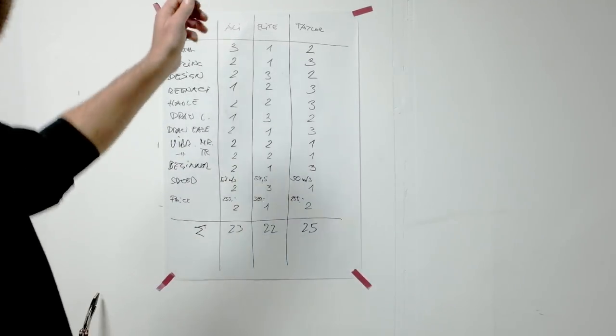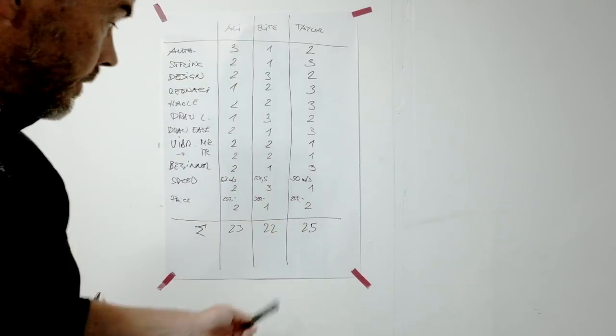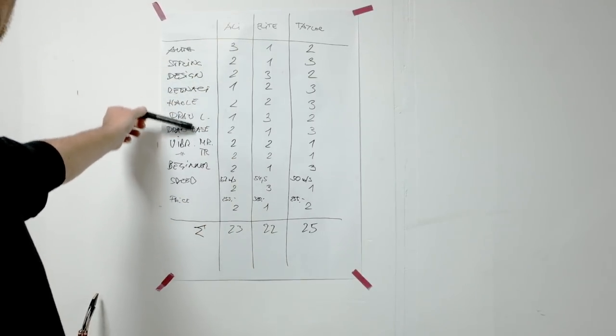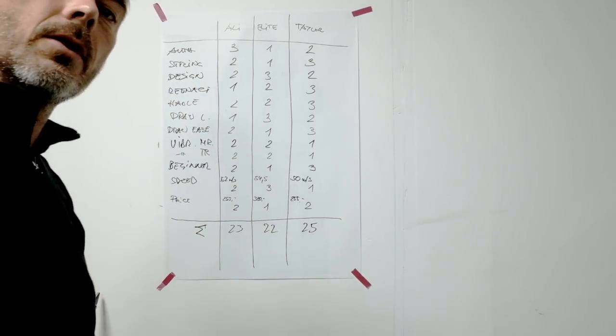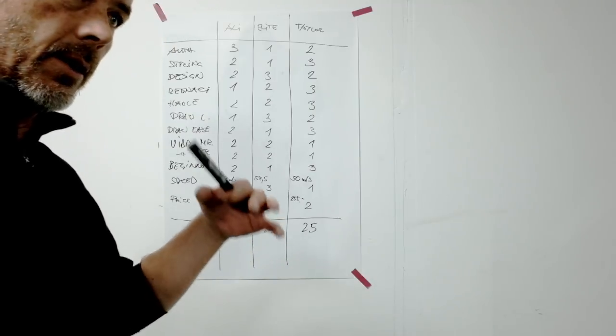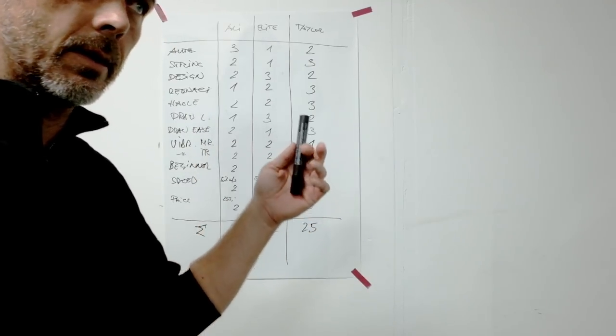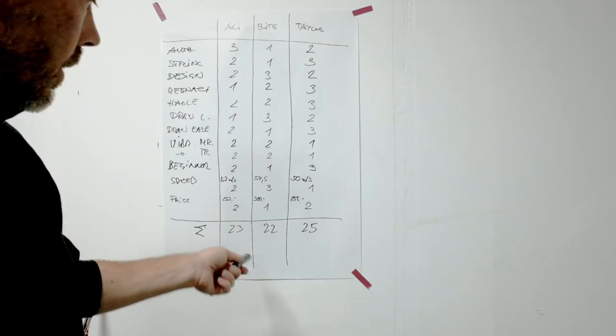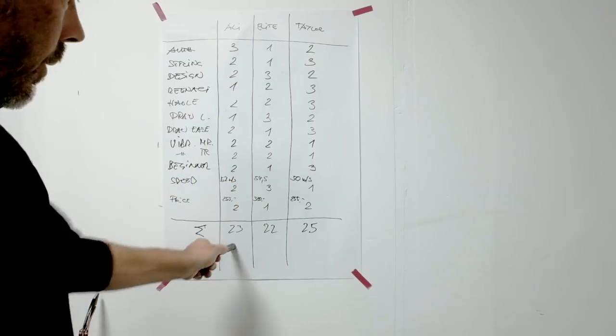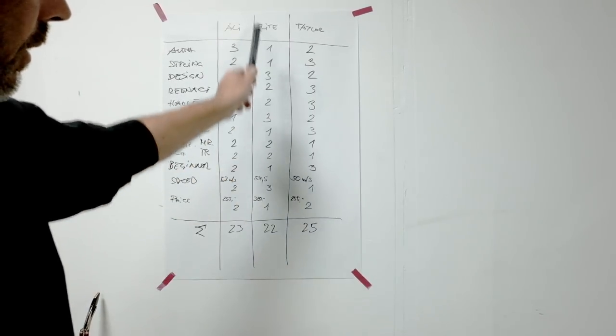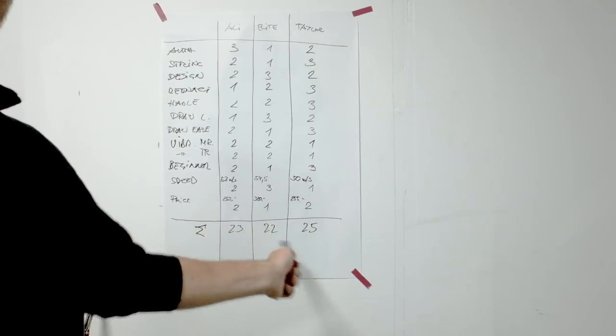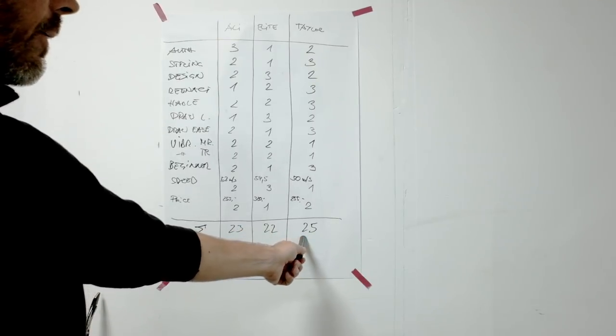Let's sum it up. All bows are amazing. But when you compare all my points here, which are for me quite of interest depending on how and where you want to use your bow, you end up Ali Bow with 23 points, Elite Bogen Weck with 22, and Taylor Archery 25 points.